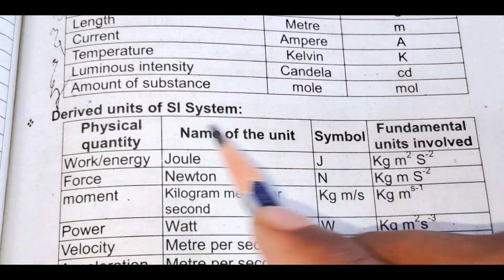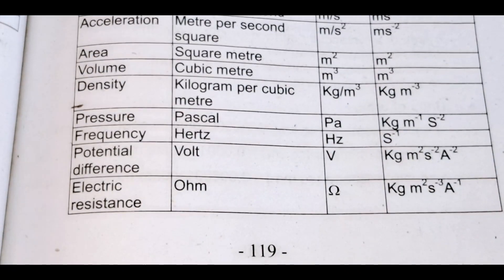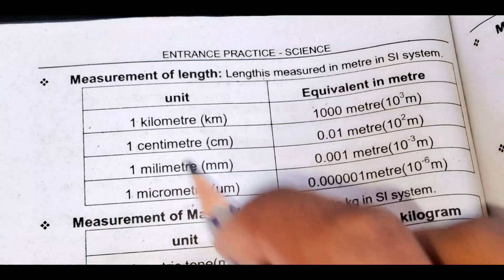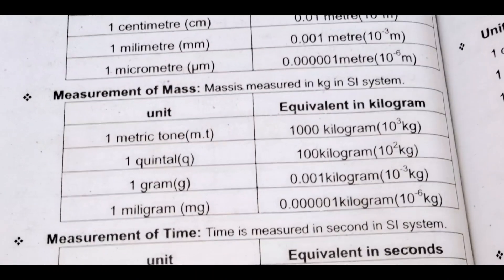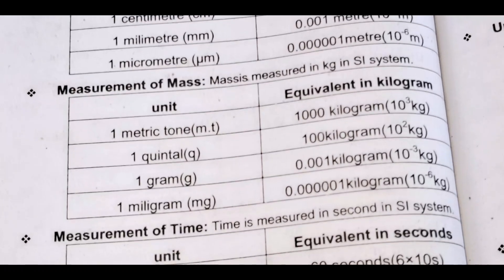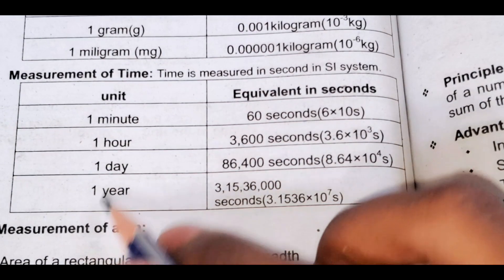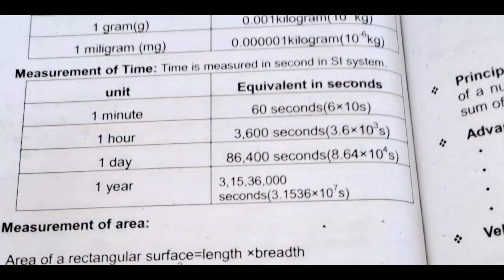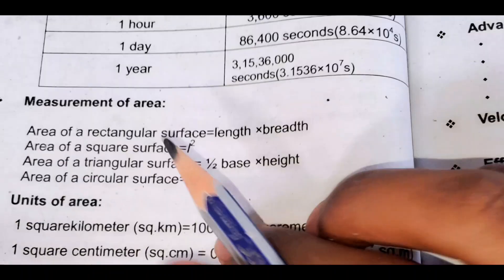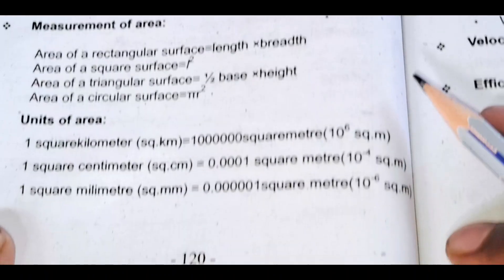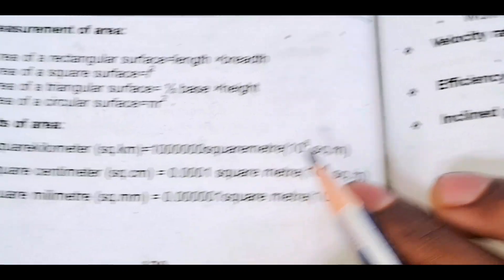The unit of measurement — the measurement of mass. We can calculate. The measurement of area — units of area — for example, one square kilometer or square meters.